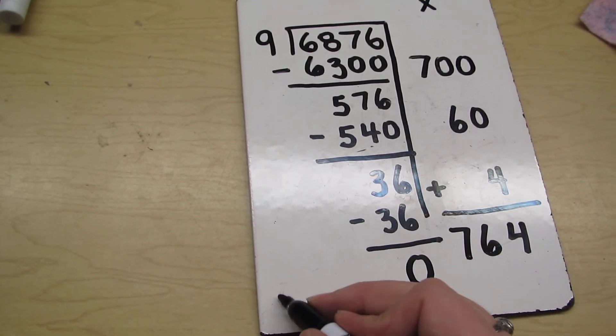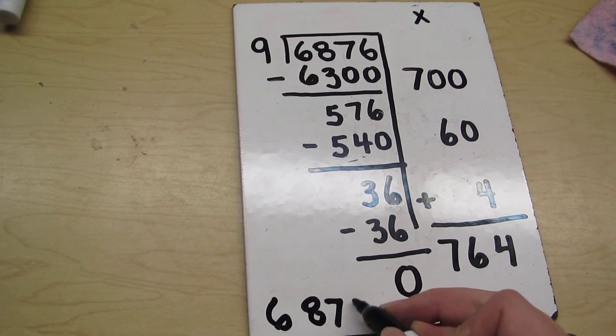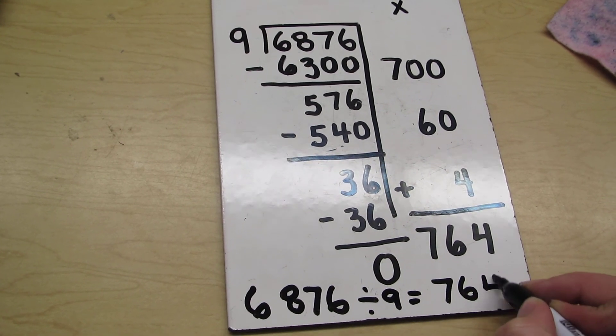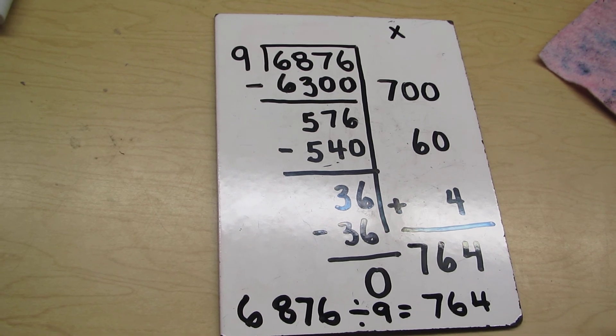So my answer, 6,876 divided by 9 equals 764. And that's how you do long division using the multiplication method.